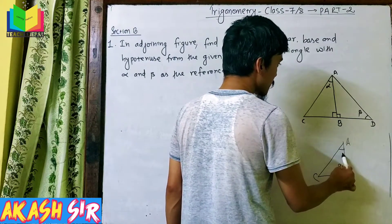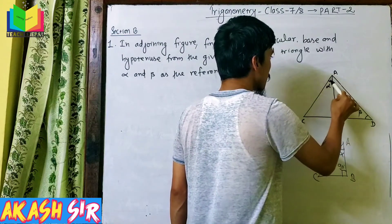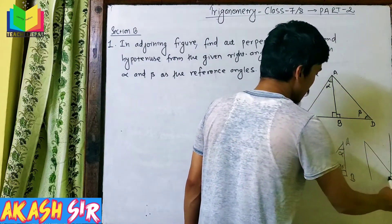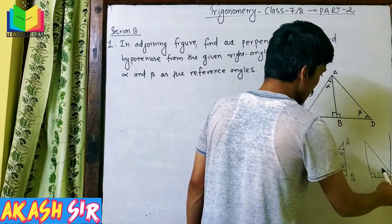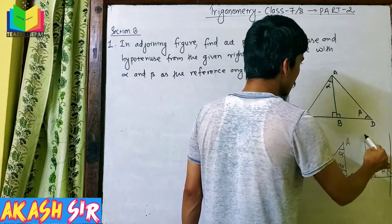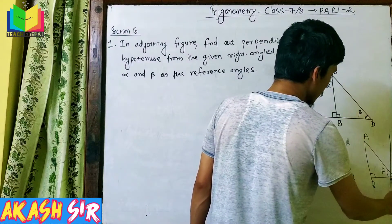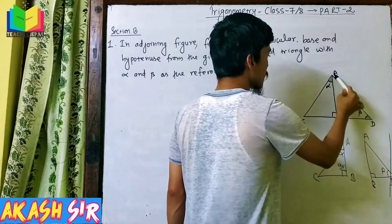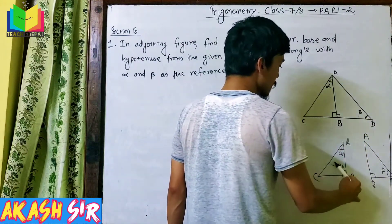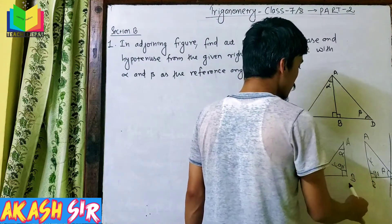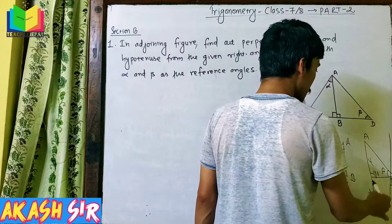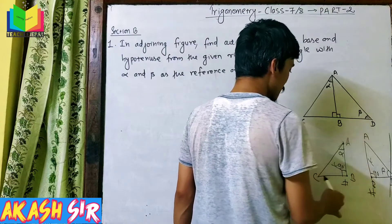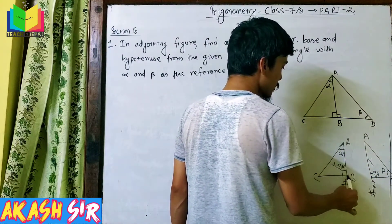The right angle triangle has a reference angle — the number of alpha and beta. Overall, points A, C, D — the right angle is in the right angle triangle, and the right angle triangle has the number of alpha. The small part is a figure; it's 90 degrees. The right angle triangle is A-B; it's a vertex — so this is a vertex, and this is a vertex, and this is point B.